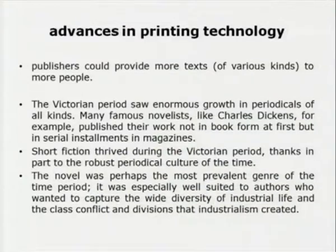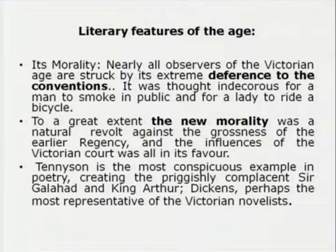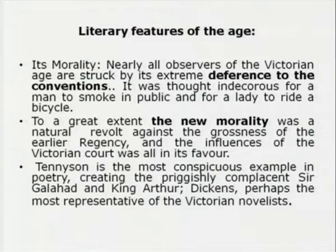There were advances in printing technology; publishers could provide more texts of various kinds to more people. Even Charles Dickens published his work not in book form first but in serial form. Short fiction thrived during the Victorian period, and the novel was perhaps the most prevalent genre of the time. Nearly all observers of the Victorian age are struck by extreme deference to conventions — it was thought indecorous for a man to smoke in public or a lady to ride a bicycle. Tennyson is the most conspicuous example in poetry, and Dickens perhaps the most representative of the Victorian novelists.